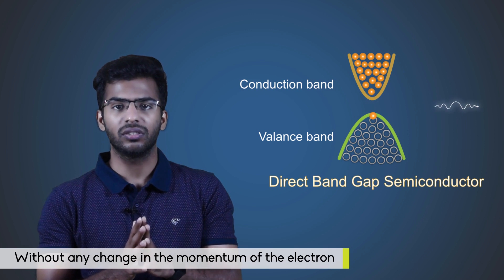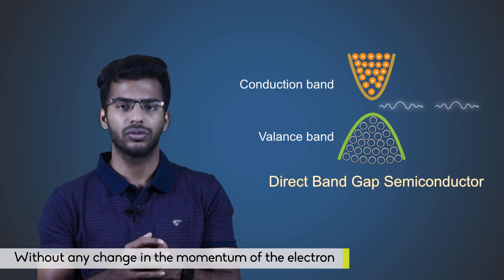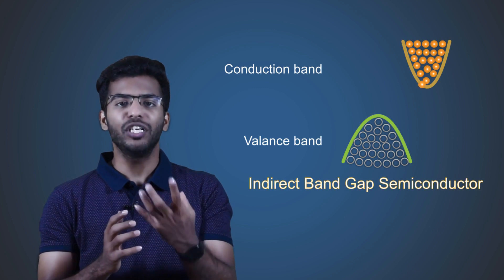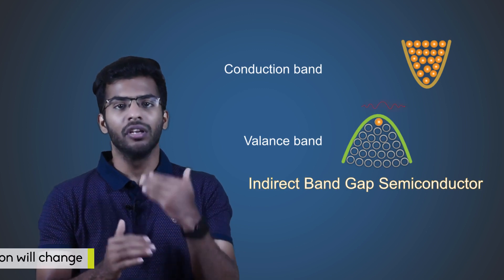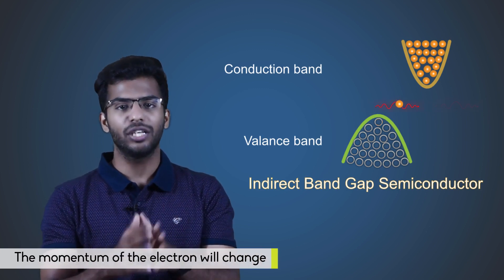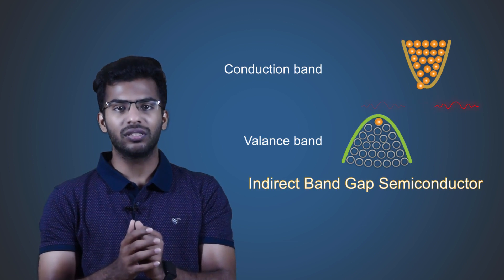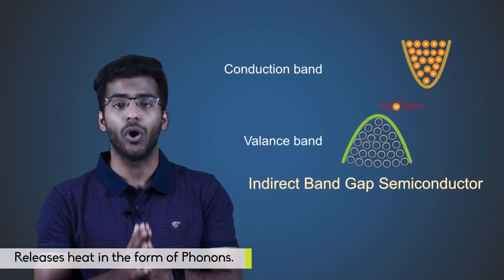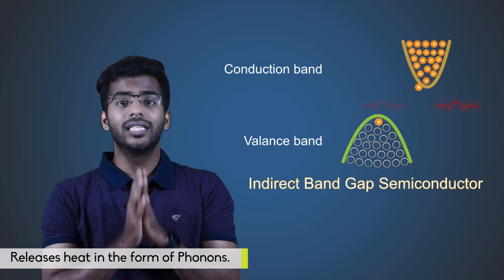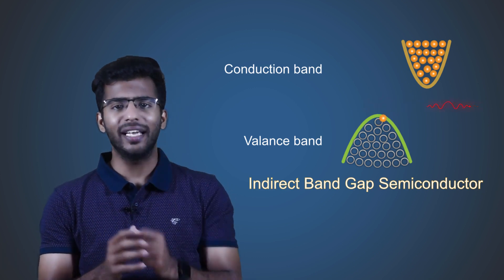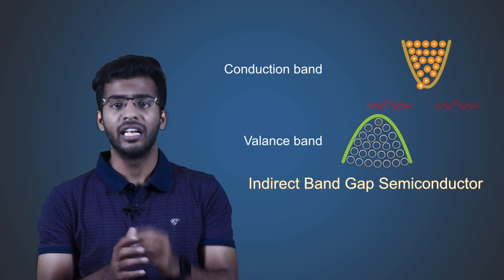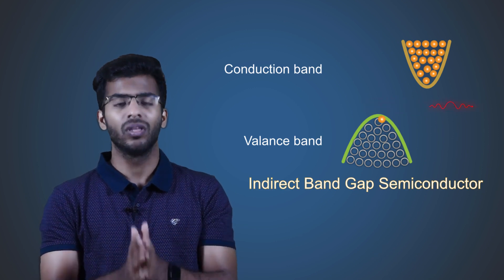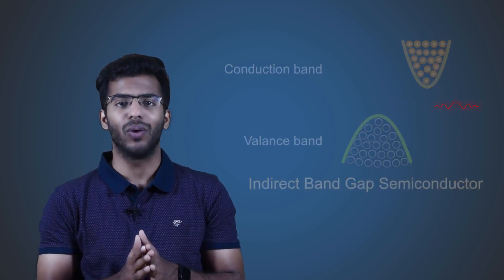This process will release photons. In the indirect bandgap semiconductors, the momentum of the electron will change in the recombination process, and this process releases heat in the form of phonons. So, the semiconducting material should be a direct bandgap semiconductor if it has to be used as an active medium. This is criteria number one.